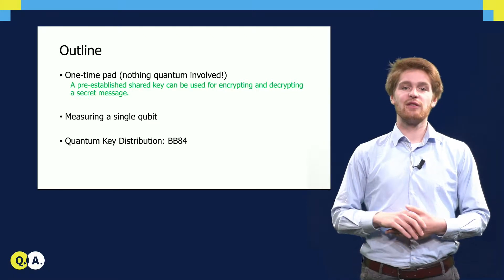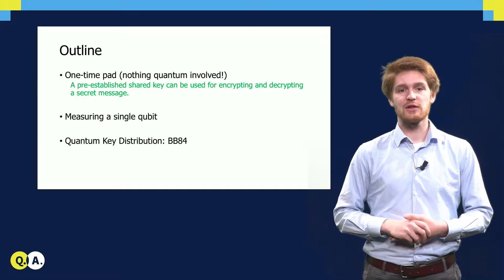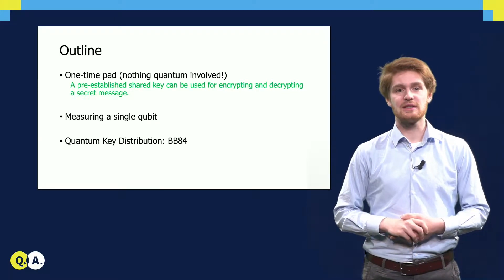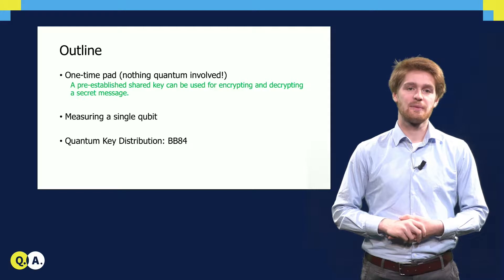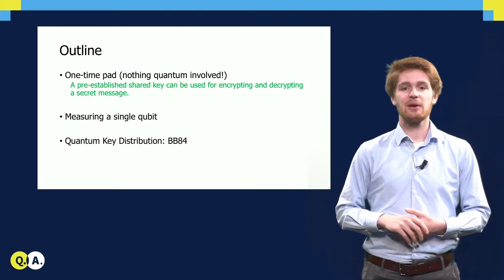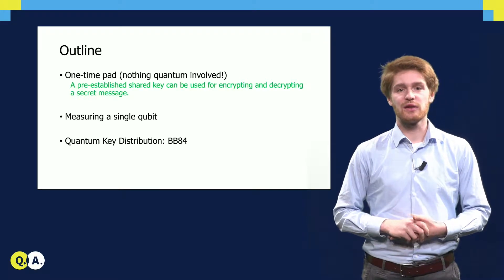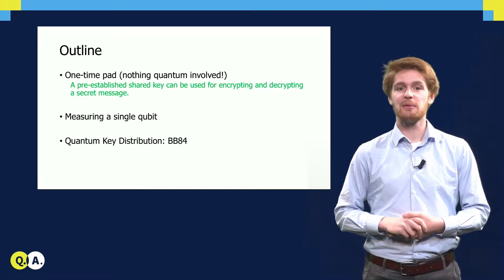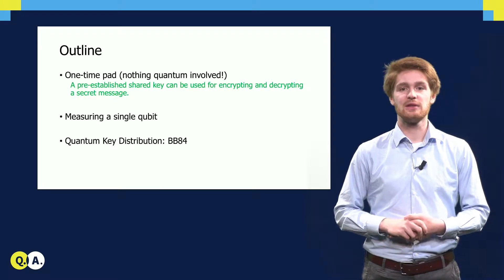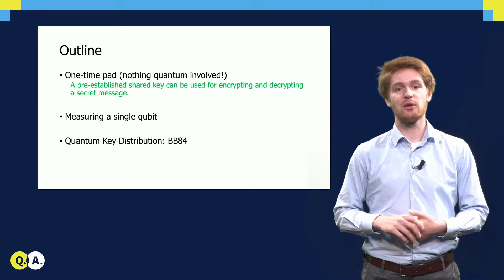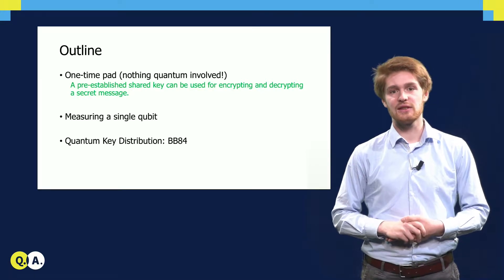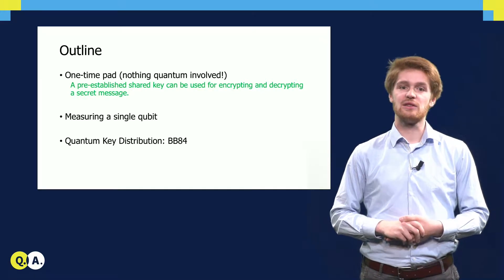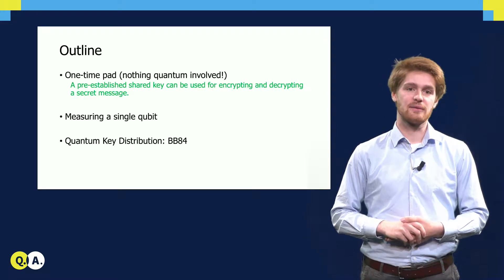We will first give an overview of the possible single qubit states and measurements we will use. The second part of the video is devoted to explaining a famous quantum key distribution scheme called BB84, named after its inventors Charles Bennett and Gilles Brassard.